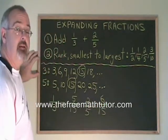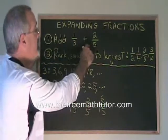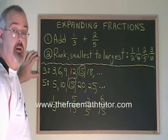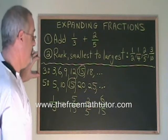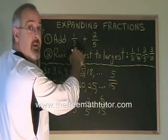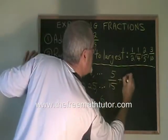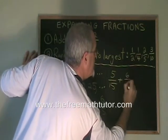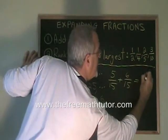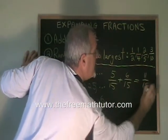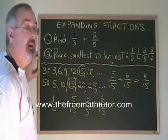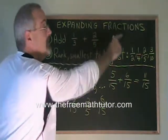So 6/15 is the expanded version of 2/5. Now that we know what our fractions are equal to when they are over the common denominator, we can finish adding them. 5/15, the expanded version of 1/3, plus 6/15, the expanded version of 2/5, is equal to 11/15. And we have our answer. This is one very useful way of using the skill of expanding fractions.